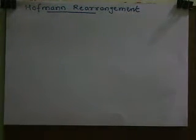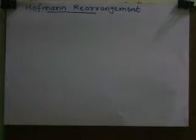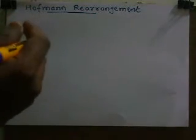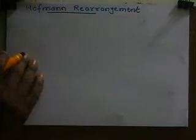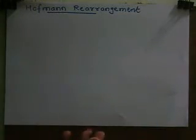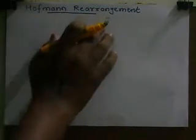In this video we discuss Hofmann rearrangement. The statement of this rearrangement is: unsubstituted amide on treatment with halogen in presence of a strong base gives a primary amine with one carbon atom less. This rearrangement is also called as Hofmann degradation.